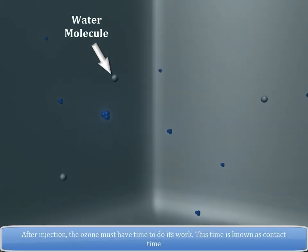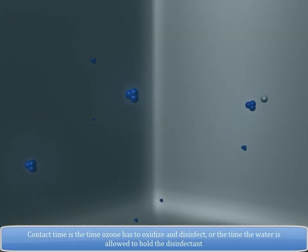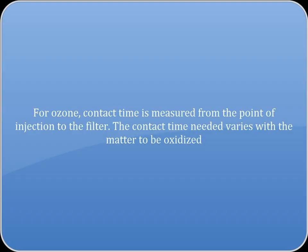After injection, the ozone must have time to do its work. This time is known as contact time. Contact time is the time ozone has to oxidize and disinfect or the time the water is allowed to hold the disinfectant. For ozone, contact time is measured from the point of injection to the filter.